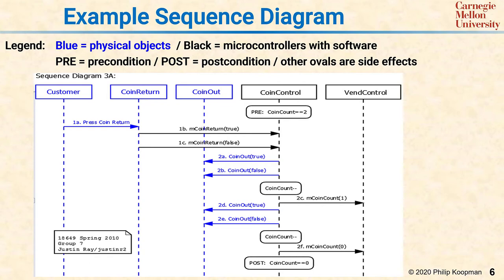After the side effect, coin control tells the ven control that it only has one coin now, because ven control keeps track of the price of things. Coin control then dispenses the second coin, reduces the coin count again, and at the end, because you started with two coins and the coin count has been reduced twice, the postcondition is guaranteed to be that there are no coins left. The ven control has been told this, as well as the coins actually being returned to the customer. Other objects in the system are omitted from the diagram because they do not participate in this particular interaction.